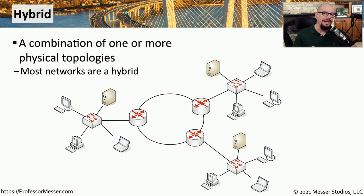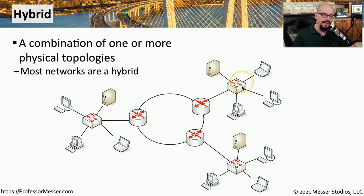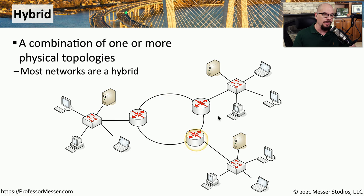When you start combining these different topologies together, you create a hybrid network. A hybrid network is more than one of these topology types all working together. For example, you might have three remote sites all connecting devices together using a switched ethernet or star network, and then you may be connecting those together over a wide area network that uses a ring topology.